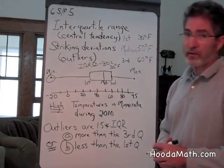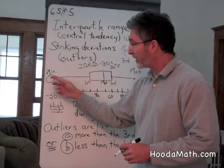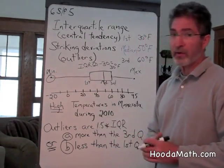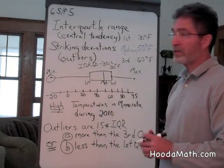negative 20 degrees. Any temperatures between negative 15 and negative 20, negative 16, negative 17, etc., are considered outliers or striking deviations in the data.